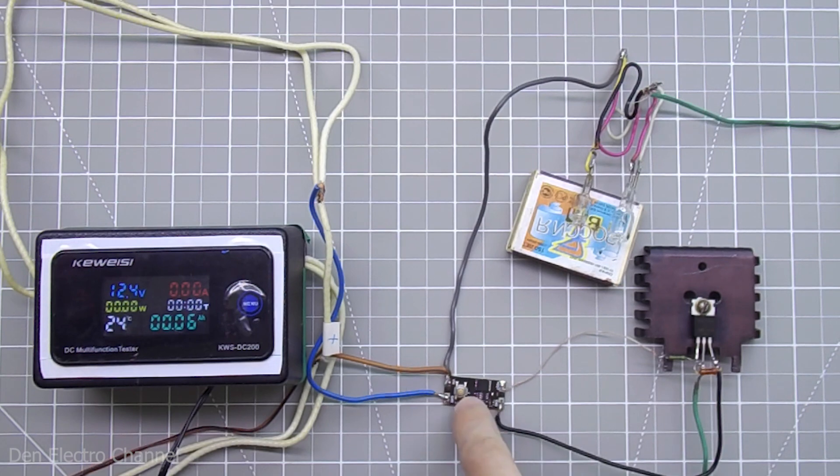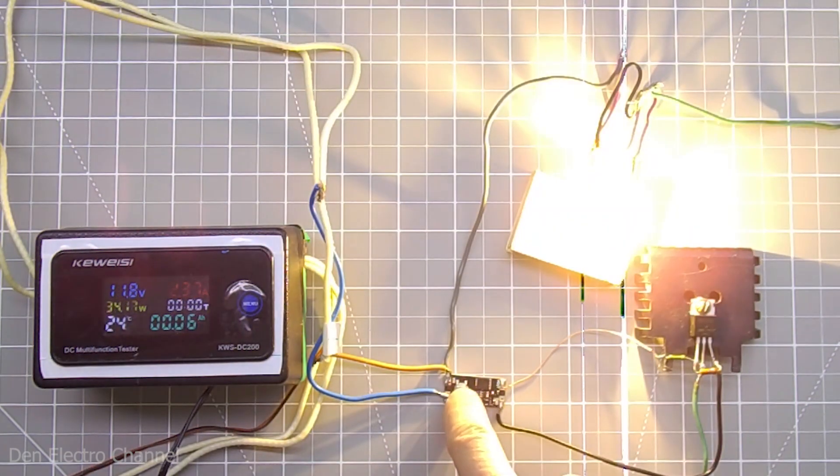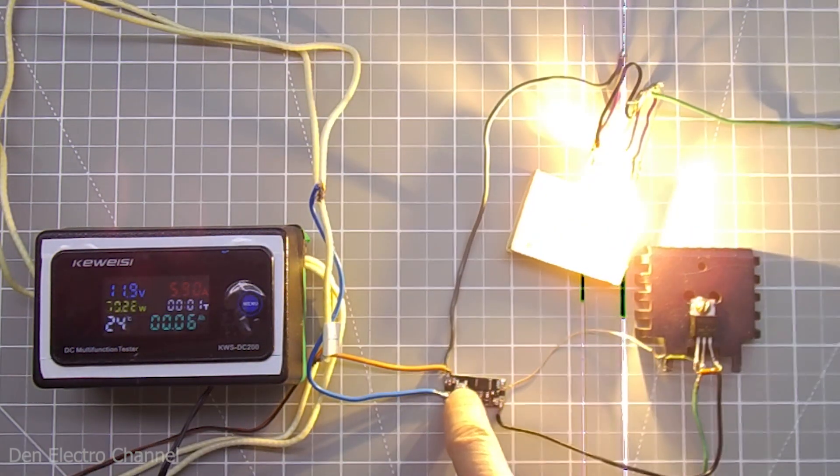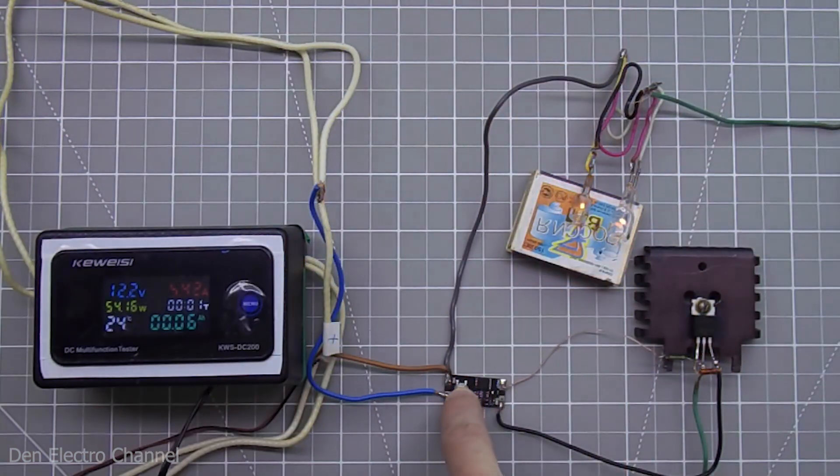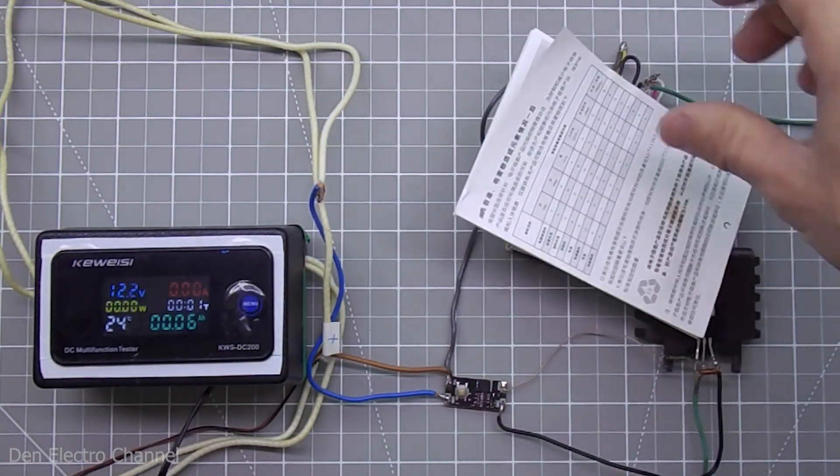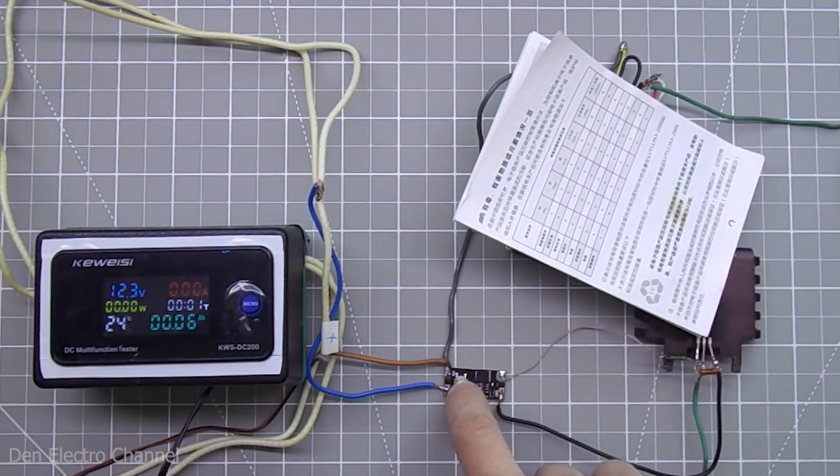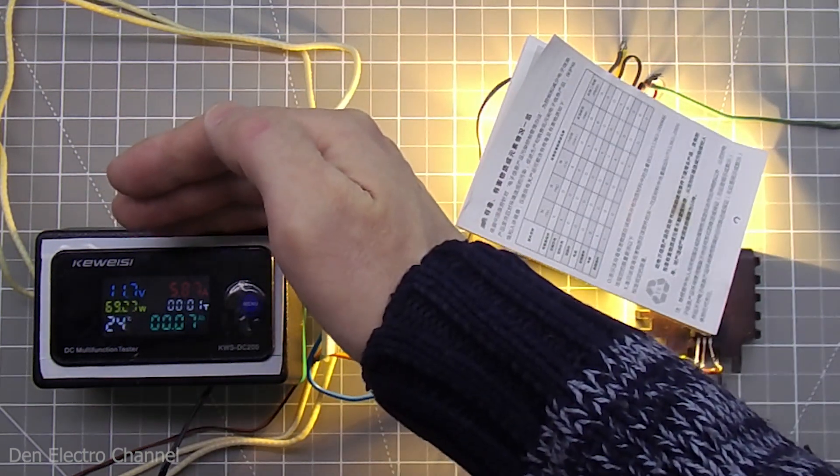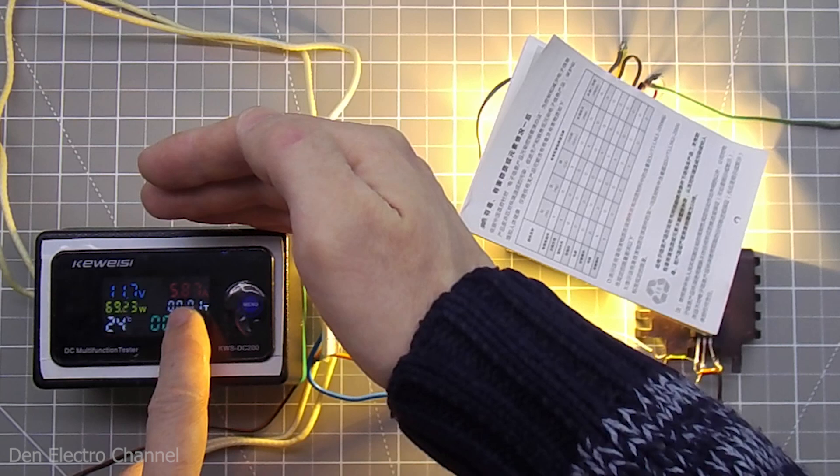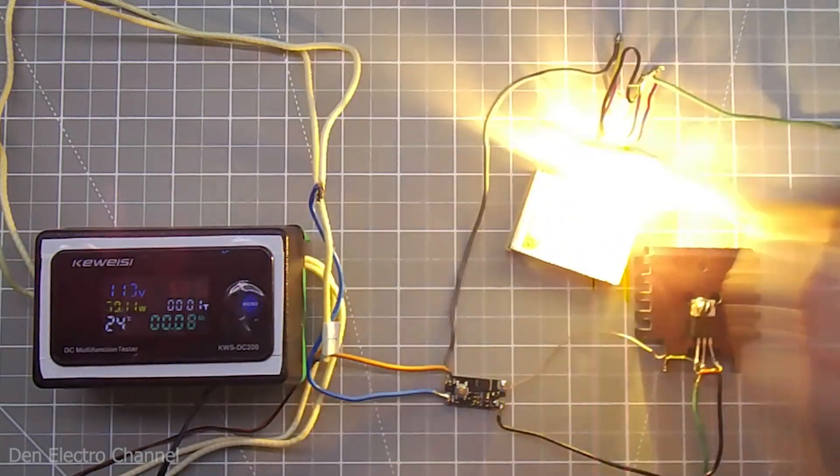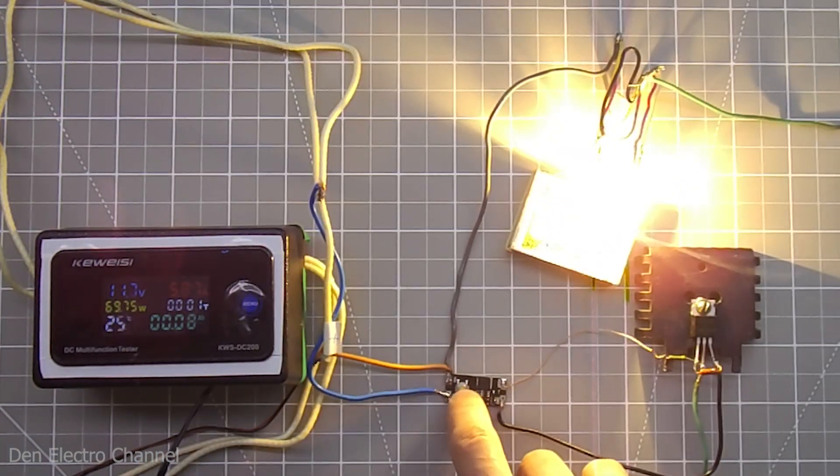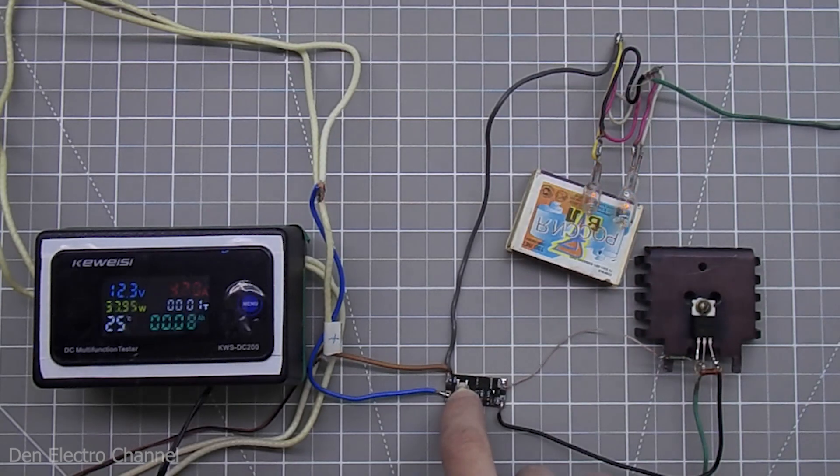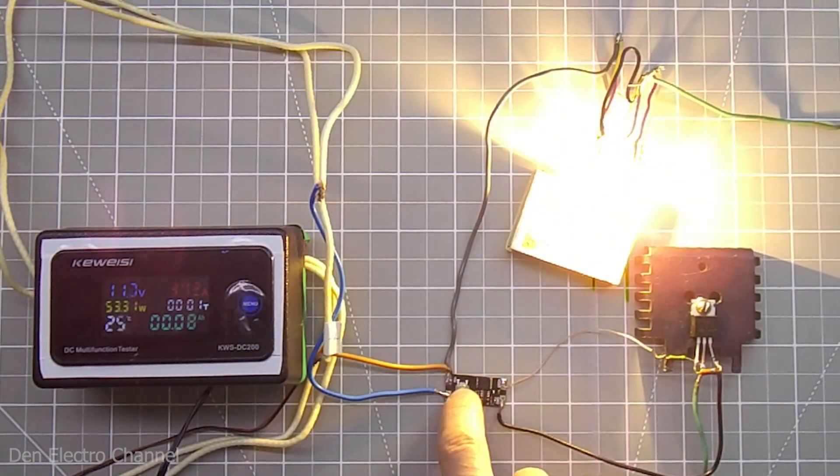In reality, this diagram will look like this. There are two halogen lamps as a load. As I said earlier, the current on them will pass through the field effect transistor. In this example, the lamps consume only 6 amperes, but you can connect a more powerful load instead. Do not forget that high current will cause the transistor to become very hot. Therefore, it will need to be placed on a radiator.